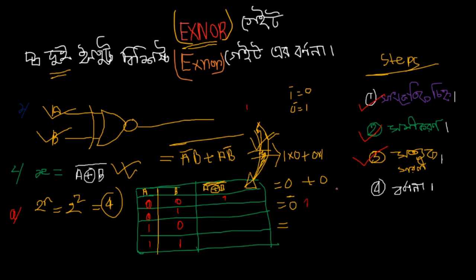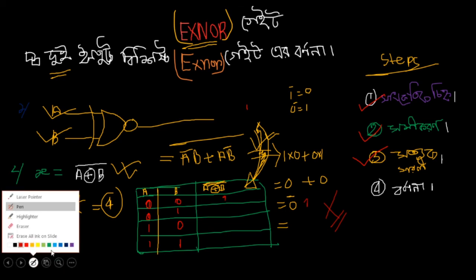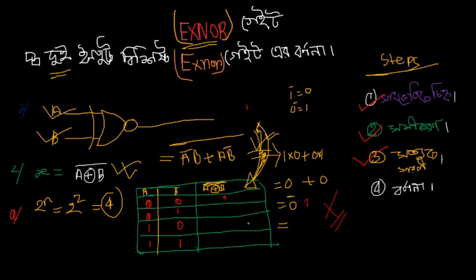Following this process for all rows: when inputs are the same, the output is 1. When inputs are different, the output is 0.